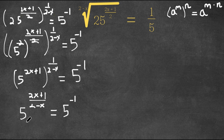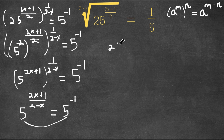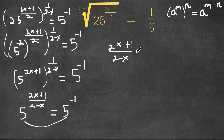As you can see, both of these have the same bases, meaning the exponents must be equal as well. So we can simply write 2x plus 1 over 2 minus x equals negative 1.